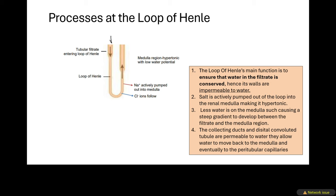The filtrate coming from the proximal convoluted tubule will enter the loop of Henle via the descending limb. The loop of Henle's main function is to ensure that water in the filtrate is conserved — meaning water will not be lost. The walls of the loop of Henle are impermeable to water; they block the movement of water and do not allow water to leave the loop of Henle. In this way, water in the tubular filtrate is conserved.